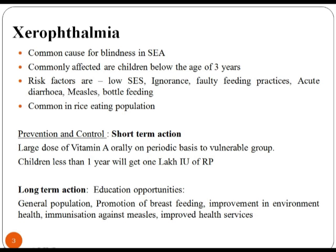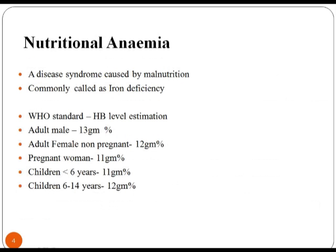Short-term actions are large doses of vitamin A orally on a periodic basis to vulnerable groups. Children less than 1 year will get 1 lakh international units. Long-term actions include education opportunities through different programs like promotion of breastfeeding, improvement in environmental health, immunization against measles, and improved health services.